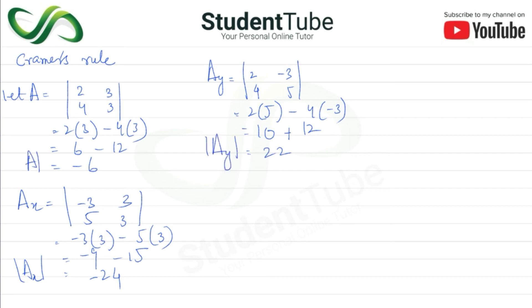Yah determinant hai na? So x is equal to ax upon a. So ax me hai hai hai hai minus twenty four and each is six six six four zero twenty four so here is minus four.